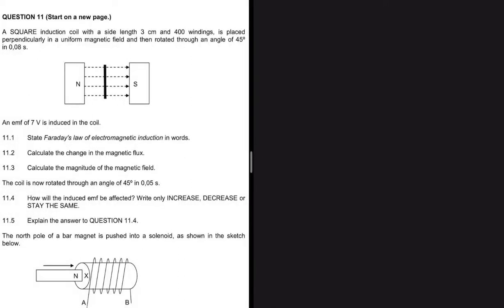How do we calculate the change in magnetic flux? There are two ways. One way: the change in magnetic flux equals magnetic flux final minus magnetic flux initial. Another way: use the induced EMF formula — EMF equals minus N (number of turns) multiplied by the change in magnetic flux divided by the change in time. If you have the change in time, the number of turns, and the EMF, you can solve for the change in magnetic flux.